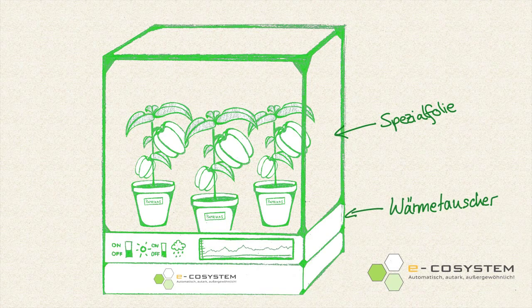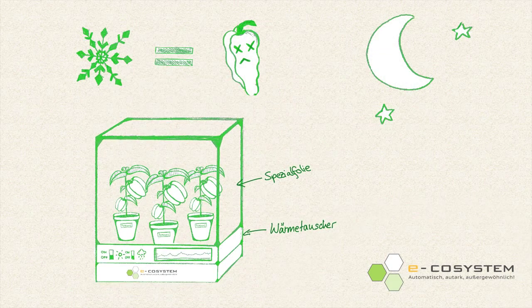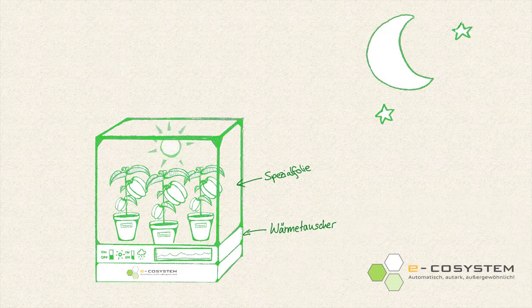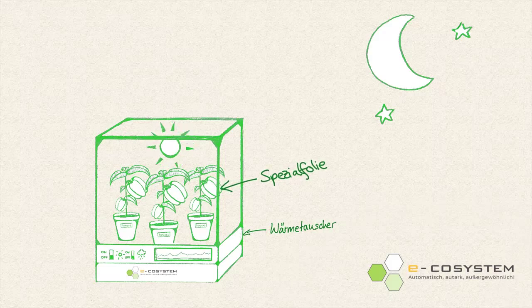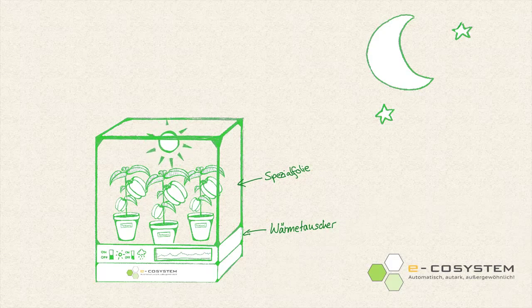A heat exchanger is located under the dome. If it is too cold for the peppers at night, the heat exchanger will give off heat to the plants. So together with the isolation by the special foil, the peppers don't have to freeze anymore.